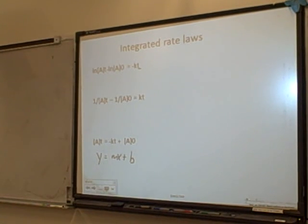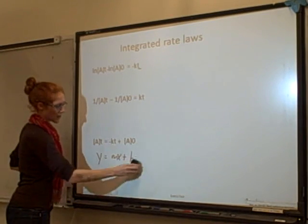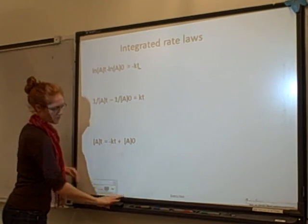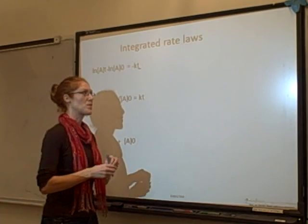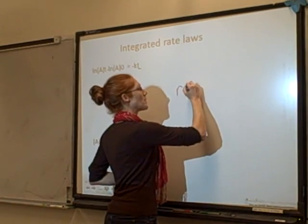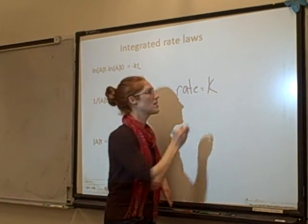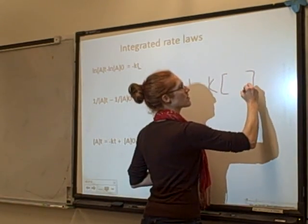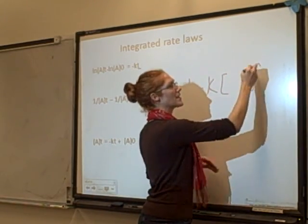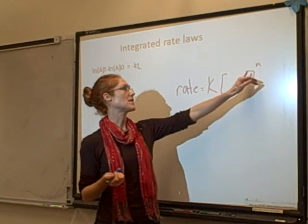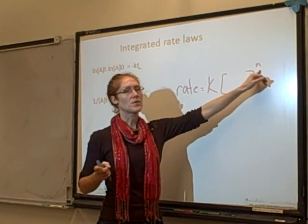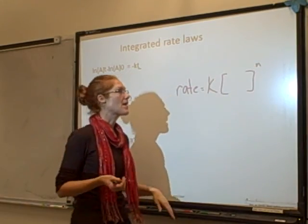Okay, so we have seen rate laws. We've seen the rate equation, which is basically where we've learned that the rate of a reaction is equal to the K for that reaction at that temperature times a concentration raised to some power. And that's the order of the reaction. And we've seen that they're almost always going to be first, second, or zero order.